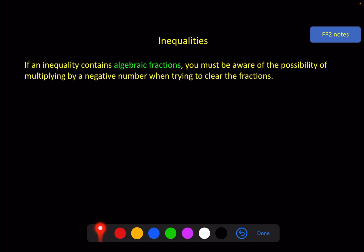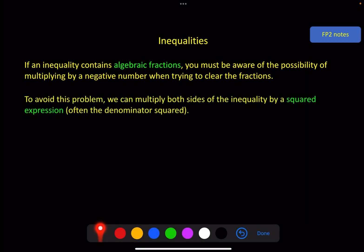The key thing here is that you've got to be aware of what we just said in the starter. If you multiply or divide by a negative number, you must flip the inequality. But if you're multiplying by a variable, you don't know if it's a negative number or not. So if you're trying to clear fractions by multiplying by the denominator, and it's an x or an expression with x, that's a problem. To avoid the problem, we multiply both sides by a squared expression, because we know anything squared must be positive, so we don't need to change the inequality. And often that will be the denominator squared.